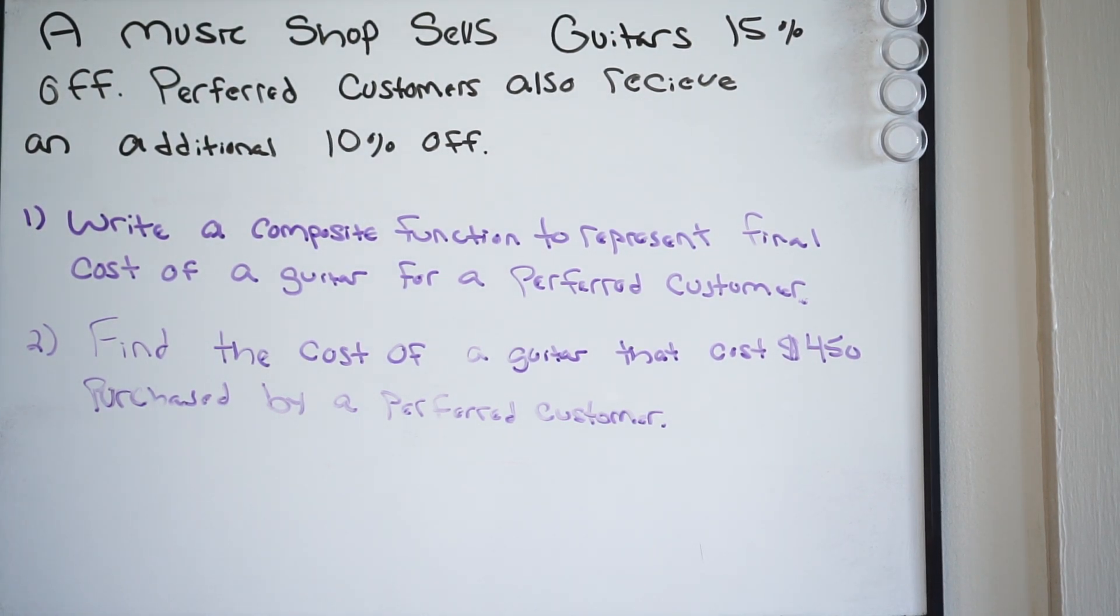Number one is asking write a composite function to represent the final cost of a guitar for a preferred customer. So they want us to write a composite function here to represent the final cost for a preferred customer. In order to do this, we're going to have to create two different functions here.